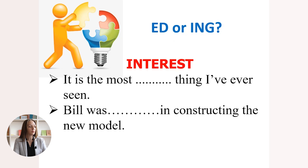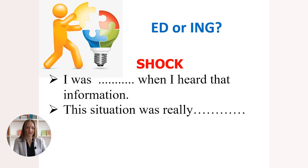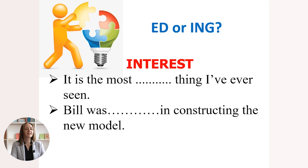Now it's your turn to show how well you've understood the usage. You will be given a verb — for example, 'interest' — and your task is to form the present or past participle adjective from this verb. First set of sentences: 'It is the most ___ thing I've ever seen' or 'Bill was ___ in constructing the new model.' Please insert the verb 'interest' modified into an adjective.